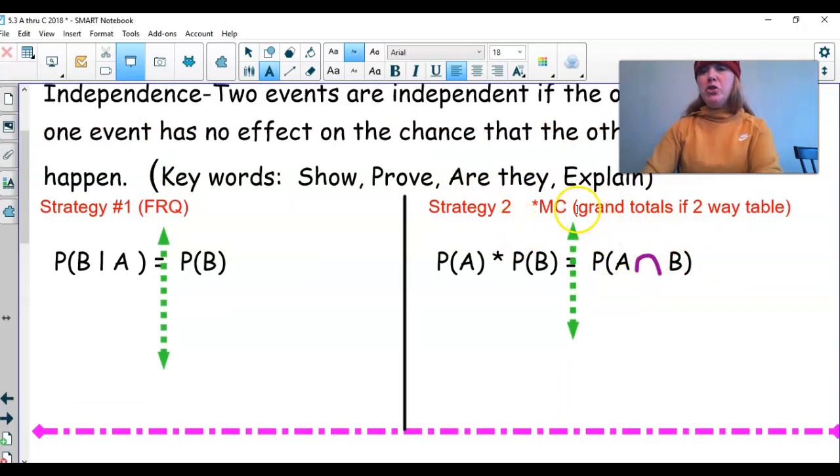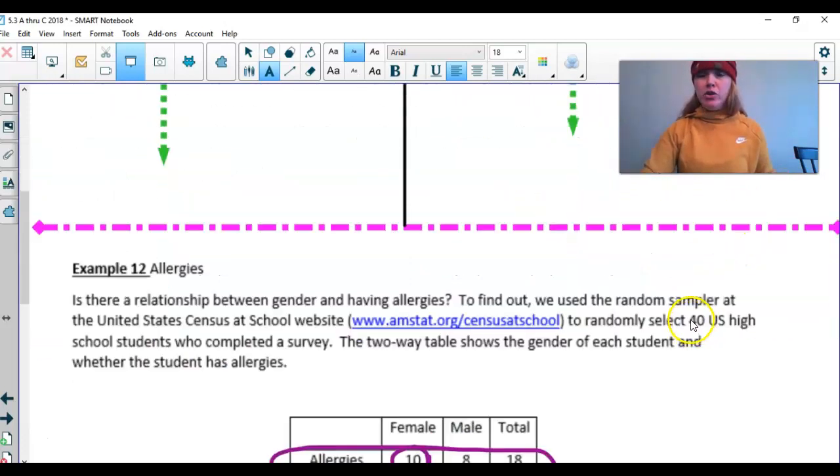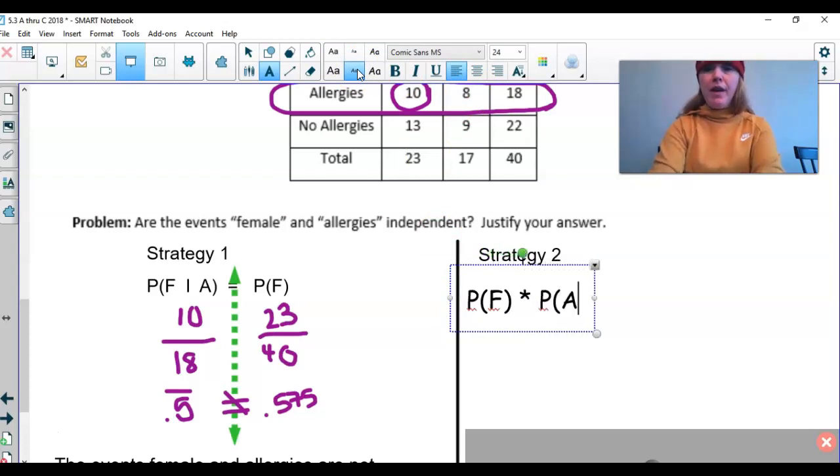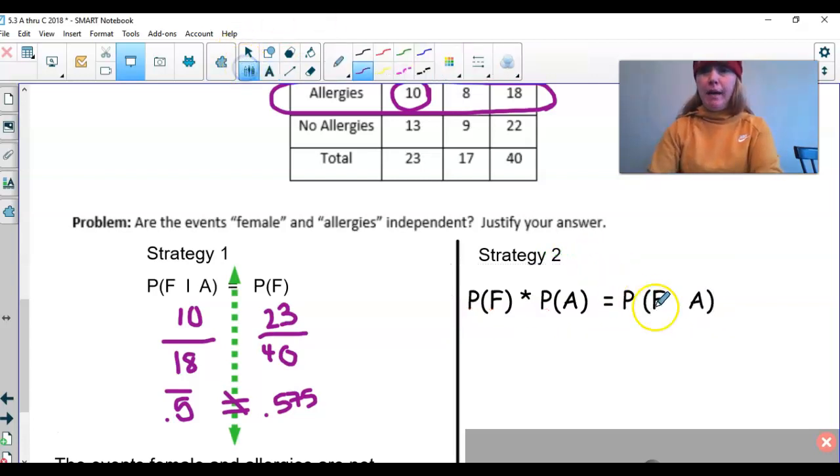Now, anytime you have a two-way table, the nice thing I guess about this is there's no conditions associated with any of them. So it's always going to be out of your grand total in your two-way table. What do I mean by that? Let's first write it out. So we're going to say the probability of being female times the probability of having allergies has to equal the probability of being female and having allergies at the same time. So I'm going to put that intersection right there.